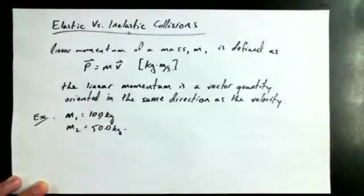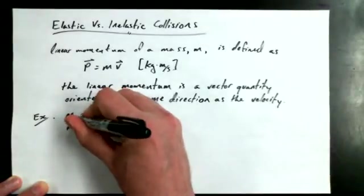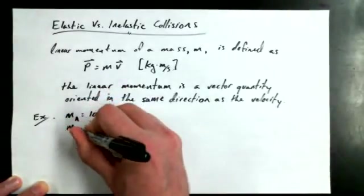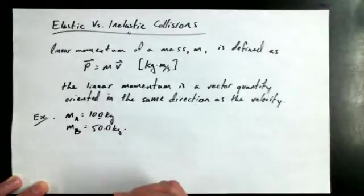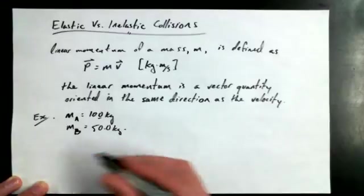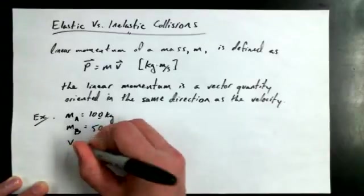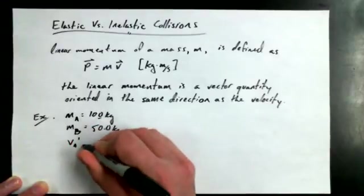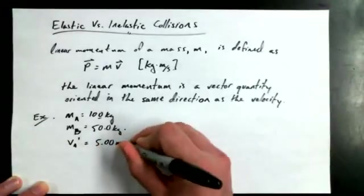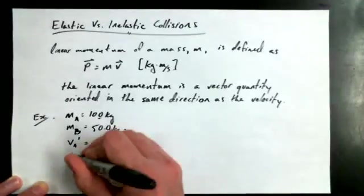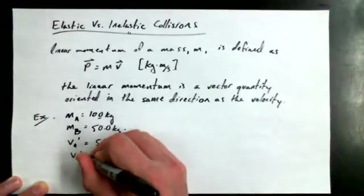Actually, instead of calling this mass 1 and mass 2, let's call it mass A and mass B. People sometimes think 1 and 2 is going to be a before and after type thing. It's two separate masses. And I want to say that V A prime is equal to 5.00 meters per second, and I want to know what V B prime is.